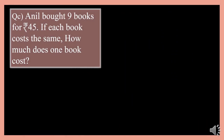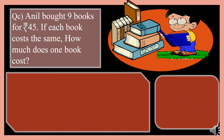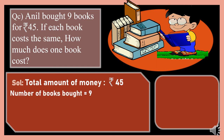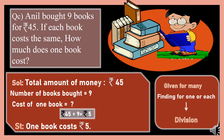Let's study the third question. Adil bought 9 books for Rs. 45. If each book cost the same, how much does one book cost? Total amount of money is Rs. 45. Number of books bought is 9. We need to find the cost of one book. Given for many, finding for one or each — so we divide. This is the third condition. We divide 45 by 9: in the 9 times table, 9 fives are 45, so the answer is 5. One book costs Rs. 5.